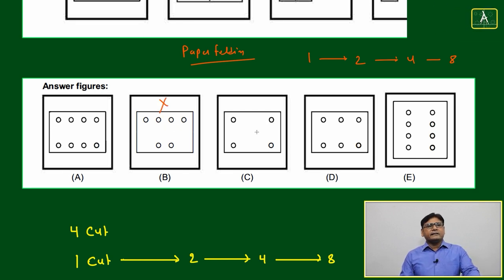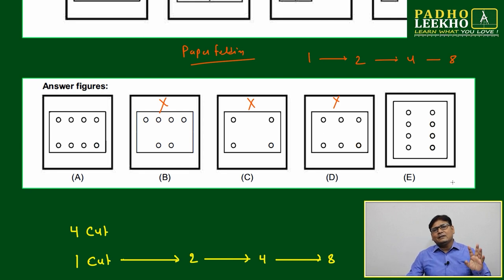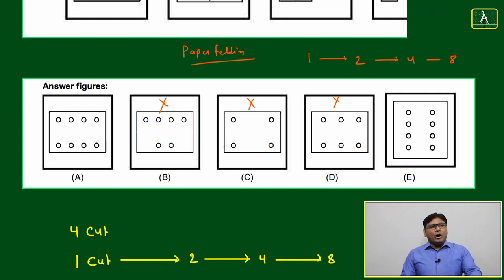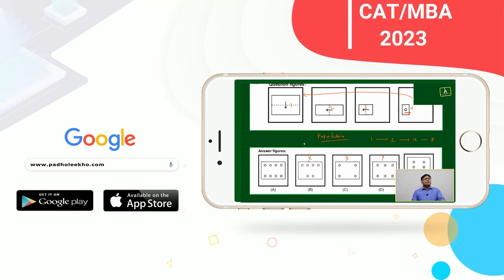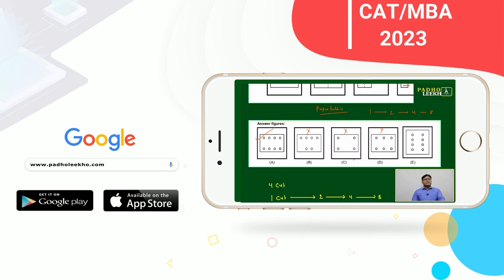Now, how can we say option A only will be the correct option? Just by looking, this is the lateral position. Due to this, option A is correct. If it were vertical position, then option E.